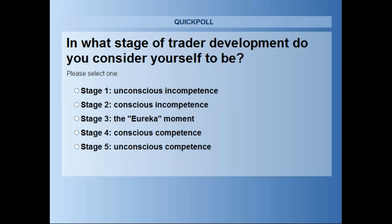Stage one is unconscious incompetence — you don't know what you don't know. Stage two is conscious incompetence — you know that you don't know. Stage three is the turn, when you start to understand that nobody can predict the market. Stage four is conscious competence — becoming more consistent, able to control your emotion. Stage five is running on autopilot — hopefully some of you can tell me what that feels like.